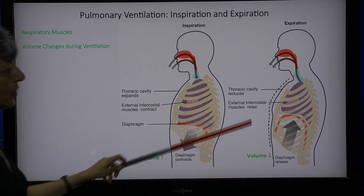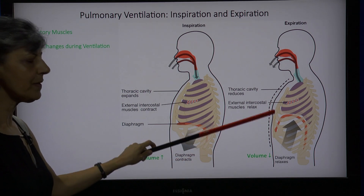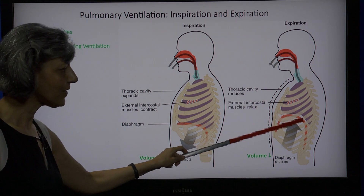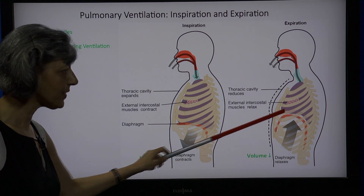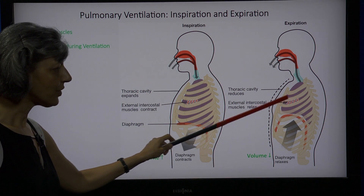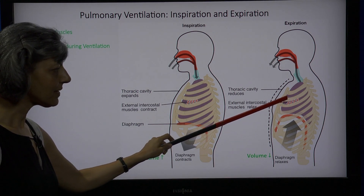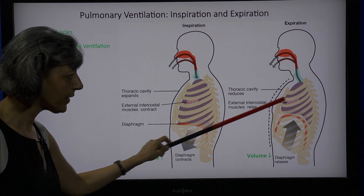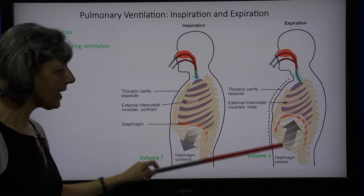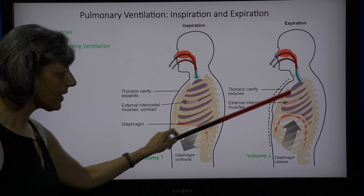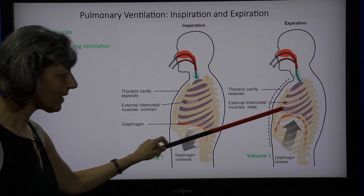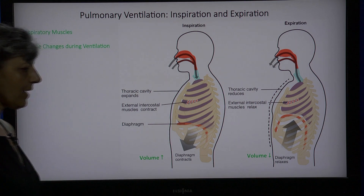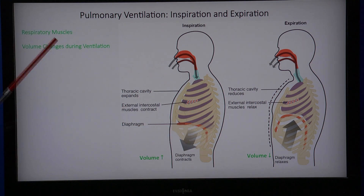In the process of expiration, the opposite is occurring. The diaphragm is now going to relax and move upwards. All of the intercostal muscles are going to relax, and the chest wall is going to move inwards. When this occurs, the volume inside the thorax is going to decrease. So far we know the respiratory muscles and the volume changes during ventilation.